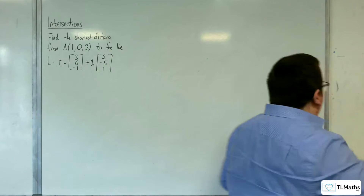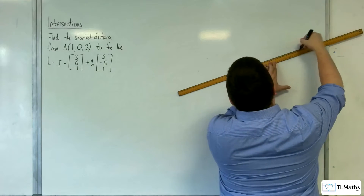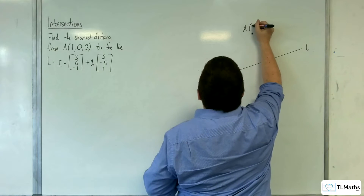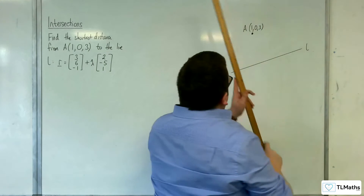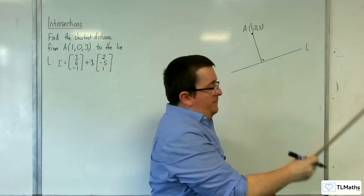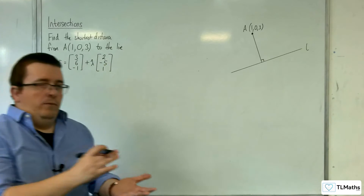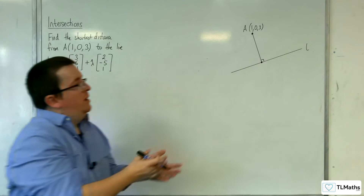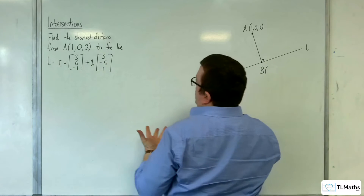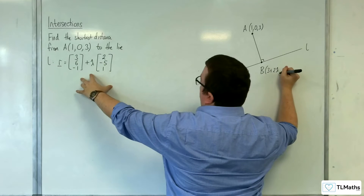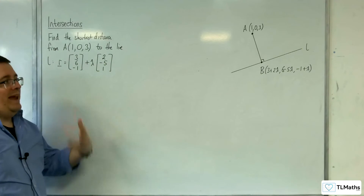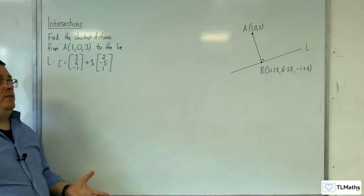So let's draw a diagram and consider what's going on. Here is my line L and here is the point A with coordinates (1, 0, 3). The shortest distance from A to the line will be the line that makes a right angle with it. So there's going to be a point on the line L for which that distance is shortest. I can call that point B, and it will have general coordinates (3+2λ, 6-5λ, -1+λ). So there is a lambda for which B is the closest point to A that sits on that line.